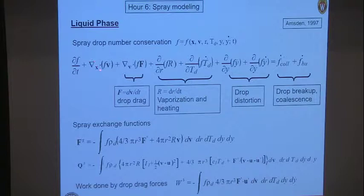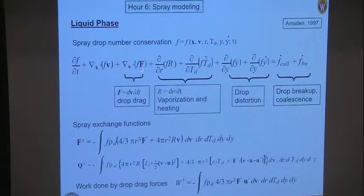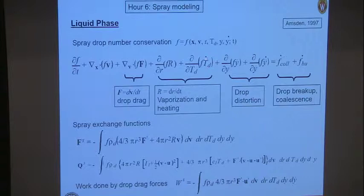The evolution of the distribution function with time is due to evolution in physical space (from the particle velocity), evolution in velocity space (from drag forces on the particle — where a model is needed), and changes in the droplet radius due to vaporization and heating. All of these affect the distribution function.